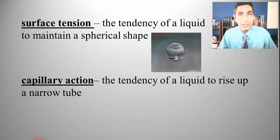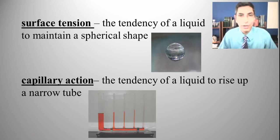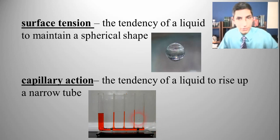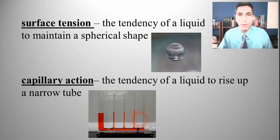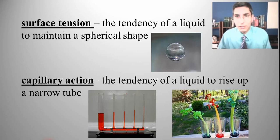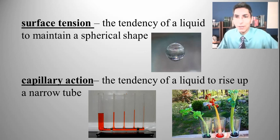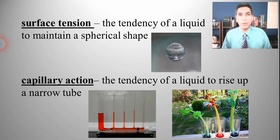We also have capillary action — the tendency of a liquid to rise up a narrow tube. The narrower the tube, the better this works. This happens because water has a greater attraction to glass than it has to itself, so it sticks to the sides of that narrow tube and pulls the rest of the liquid up. Capillary action also explains water movement in plants, and it explains why we can dry off with a towel — the water is absorbed by the towel through capillary action.